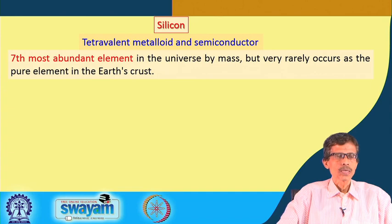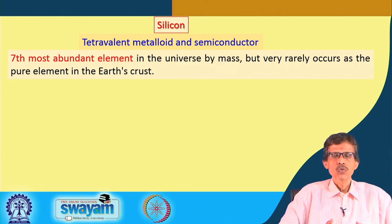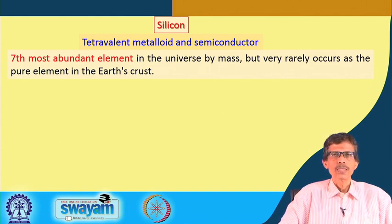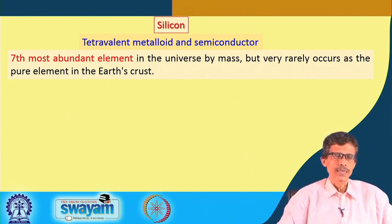Silicon is the seventh most abundant element in the universe by mass. It is also heavier because you have the silicate rock materials. Geologists are very much interested in handling silicate materials or silica-based compounds, but silicon very rarely occurs as a pure element in the earth's crust. We are not able to get elemental silicon from the earth's crust directly; instead we get different forms starting from feldspar to quartz to glass material as silicon dioxide, or silicates, or the more complicated form of alumina silicates.